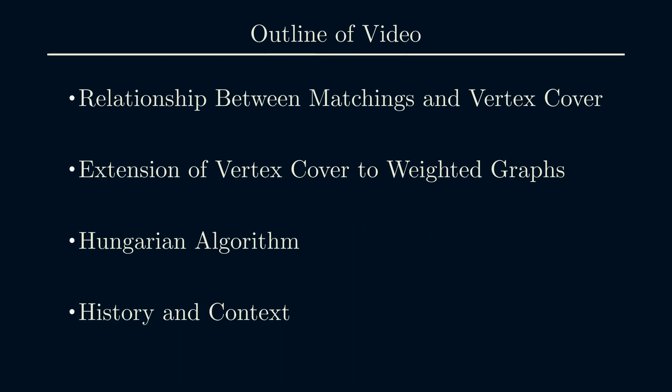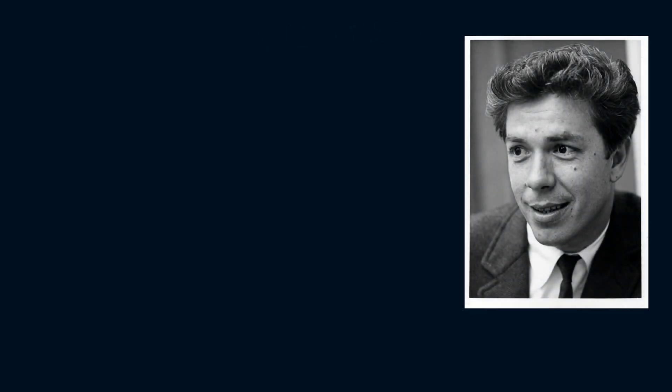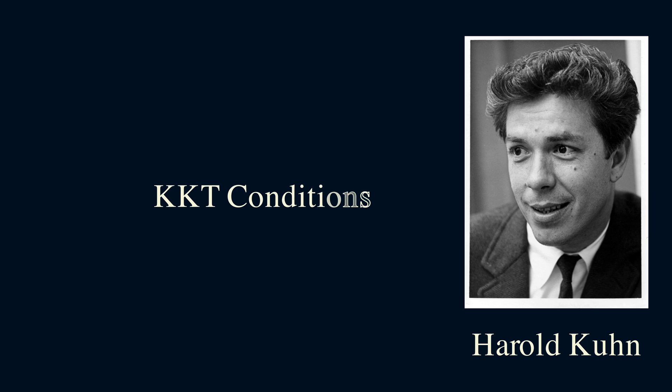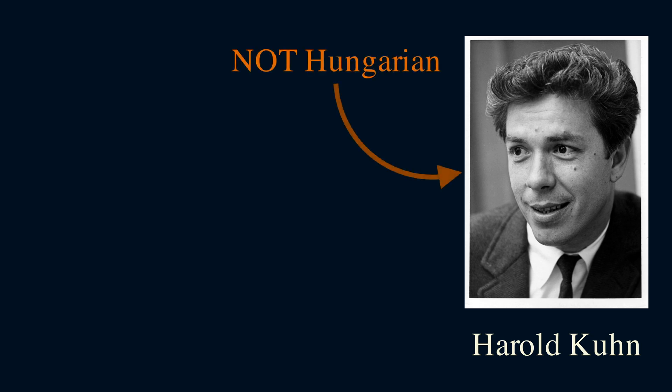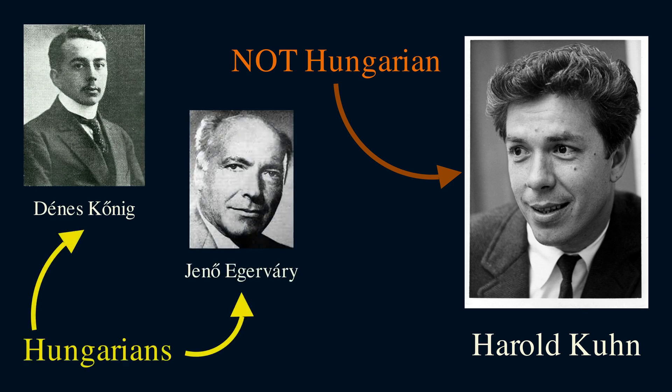Finally, let me conclude by providing some history and broader context. This here is Harold Kuhn, and he's the founder of the Hungarian algorithm. He's a big name in optimization. He's one of the k's in the KKT conditions, which you might encounter if you study nonlinear optimization. Kuhn himself is not a Hungarian. He's actually an American. But he was so inspired by both Koenig and Egerváry, who are both Hungarians, that he decided to name it the Hungarian algorithm in honor of them.